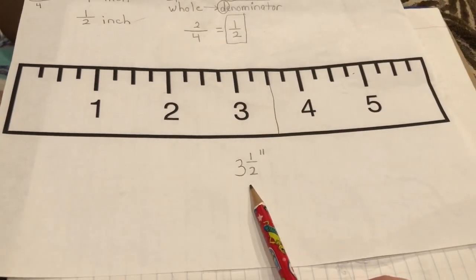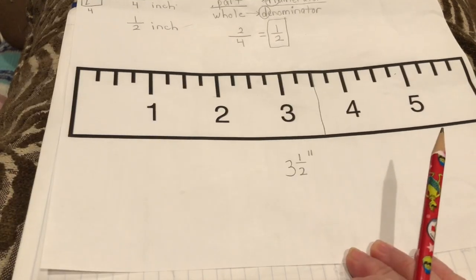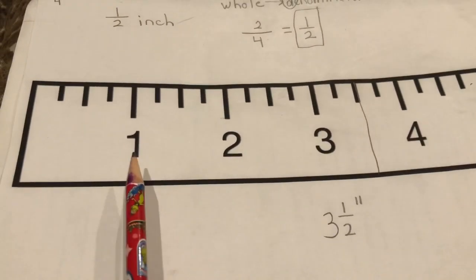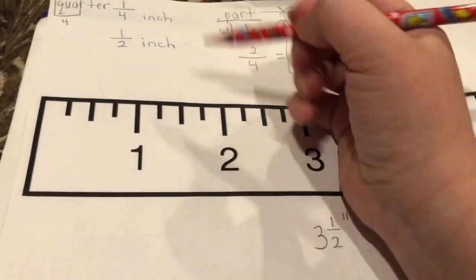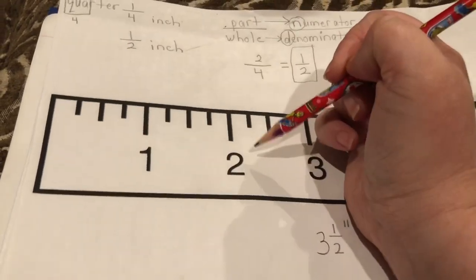But we're going to start talking about quarter inches. So let's look at this section between one and two. We can divide this inch into four pieces.